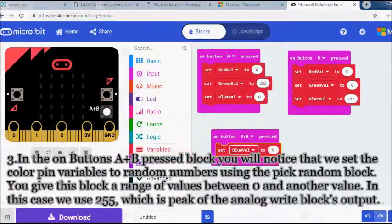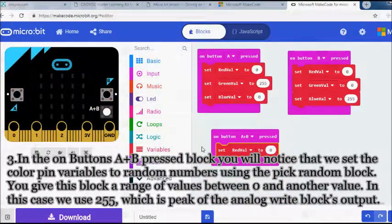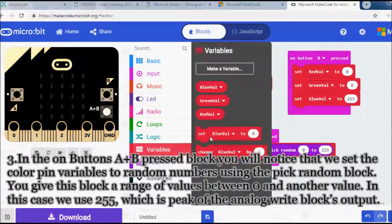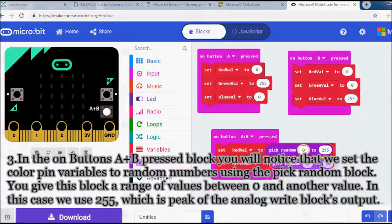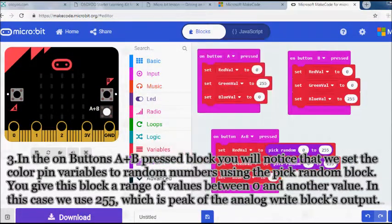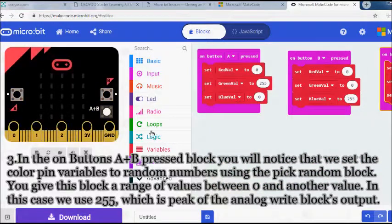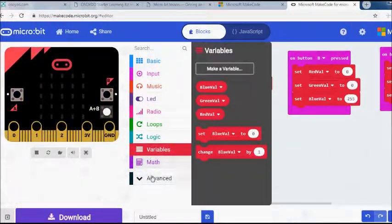Third, in the on buttons A plus B pressed block you will notice that we set the color pin variables to random numbers using the pick random block. You give this block a range of values between zero and another value. In this case we use 255, which is peak of the analog write block's output.